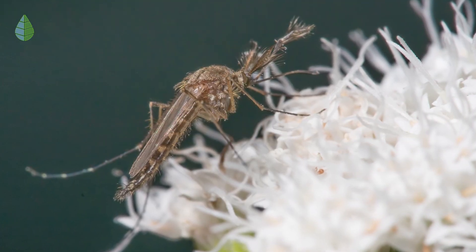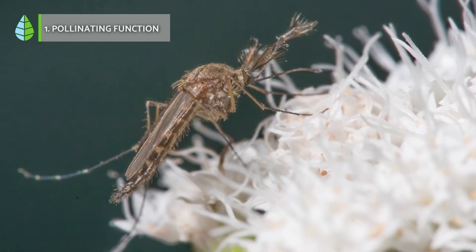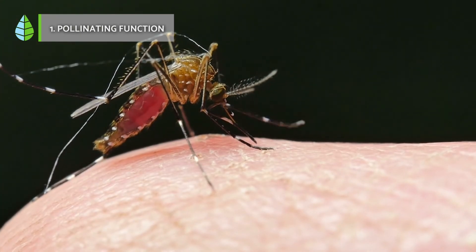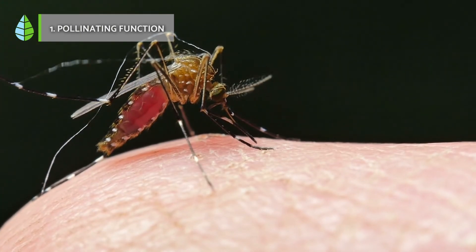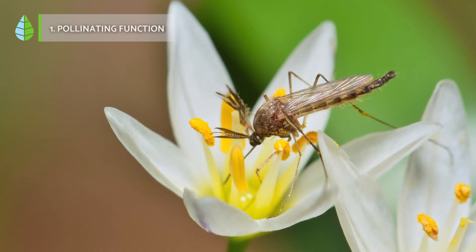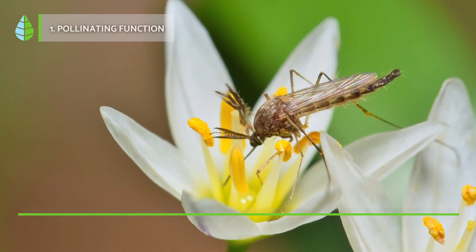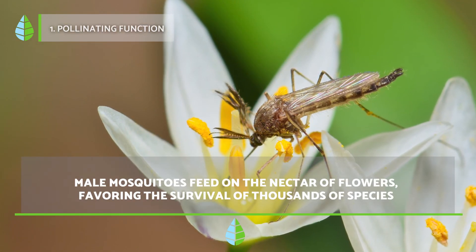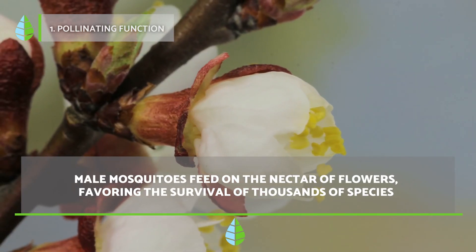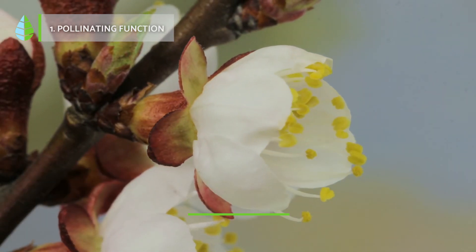Pollinating function. Female mosquitoes feed on blood, thus following a diet based on hematophagy, while male mosquitoes feed on nectar. In this way, it is essential to highlight the pollinating function that male mosquitoes fulfill by feeding on the nectar of flowers in different ecosystems in which they inhabit.